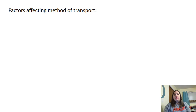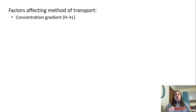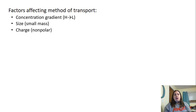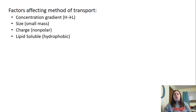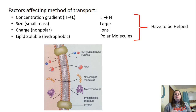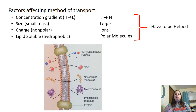Factors affecting which method of transport is used include the concentration gradient — molecules like to move from high to low concentration, where there's more of them to where there's fewer. Smaller molecules move across the membrane more easily. Non-polar molecules with no charge have an easier time, as do hydrophobic molecules that like fats. Conversely, if moving from low to high concentration, or if molecules are large, charged ions, polar, or water-loving, they need help crossing — using channel proteins or bulk transport.